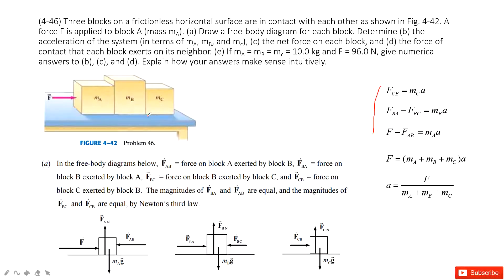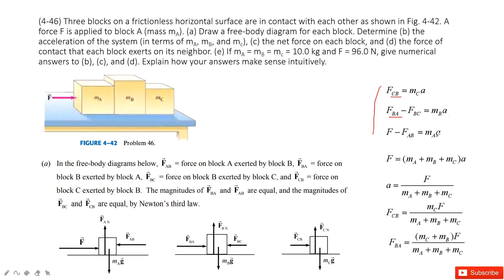Next, I want you to find the contact force between each object. The contact forces are Fcb and Fba. To find Fcb, use mass C times acceleration — input the acceleration value and we get Fcb. And Fba is Fbc plus mass B times acceleration. Input the values and we find the result. It's easy.